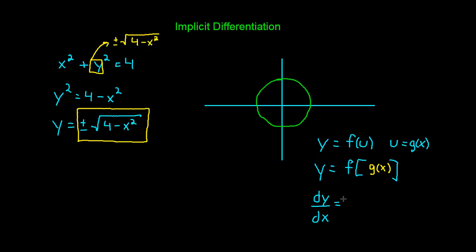So we said that the derivative of y with respect to x is the derivative of the outside function, f prime, with respect to u, multiplied by the derivative of the inside function with respect to x, which is u prime. This would be one way to write the chain rule.